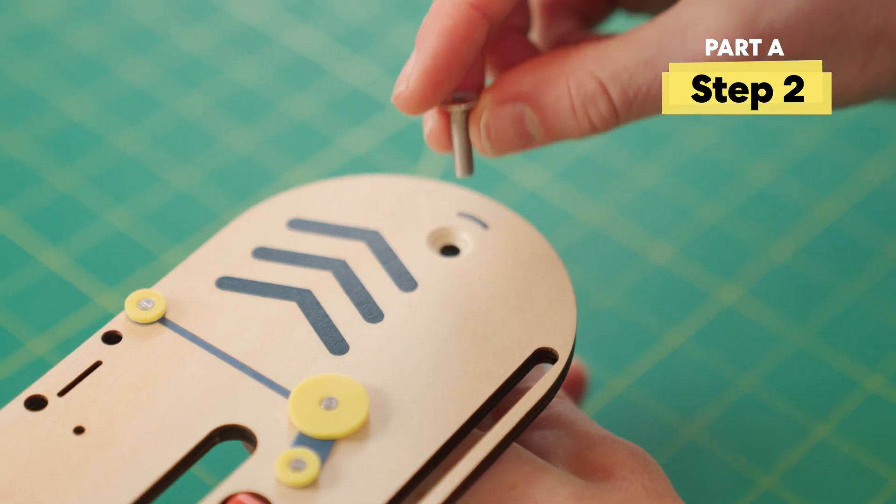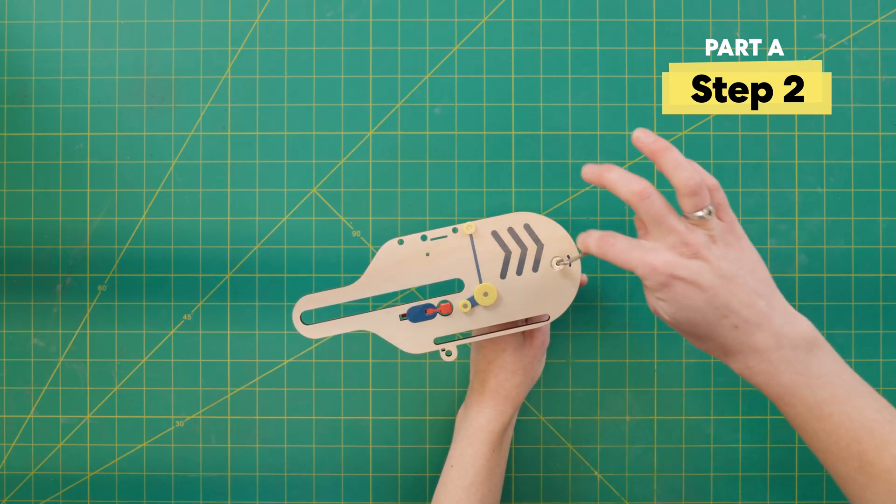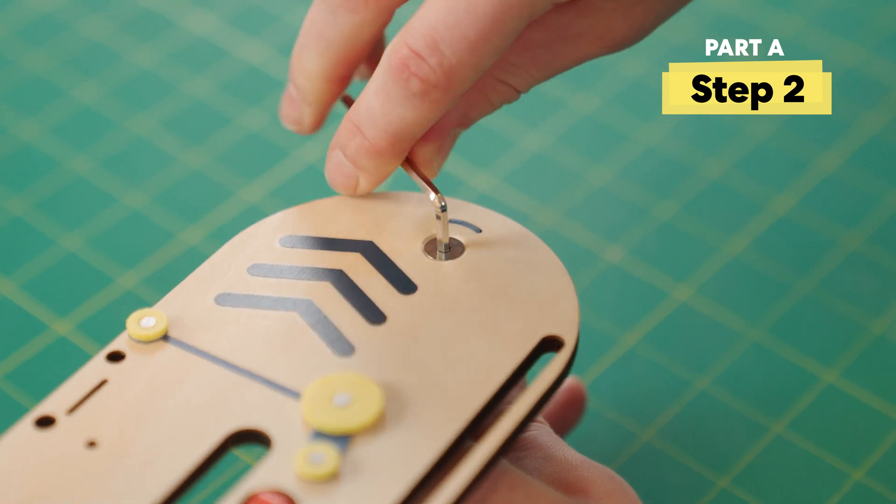Then take this screw and tighten it all the way down with your Allen wrench. Tighten it down all the way until it doesn't wiggle.